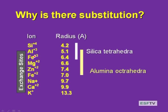The exchangeable ions are electrostatically attracted to the colloid surface. It's important to keep two concepts separate: isomorphous substitution involves covalent bonding within the crystal structure, while exchange sites involve electrostatic attraction and adsorption. These are fundamentally different types of bonding.